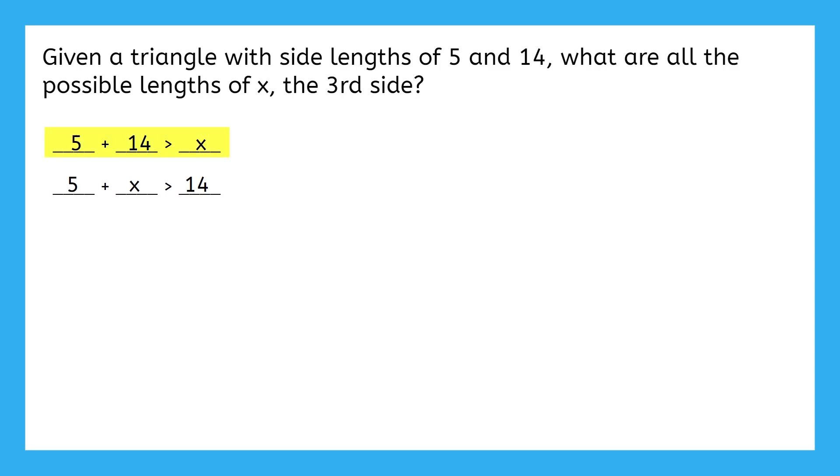This first inequality is set up pretty perfectly already. 5 and 14 add to be 19, so this says 19 is greater than x, which is the same as saying x is less than 19. The second inequality needs a little rearranging. How can we get x alone on one side of this inequality? Hopefully you said to subtract 5 on both sides, which gives us that x is greater than 9.